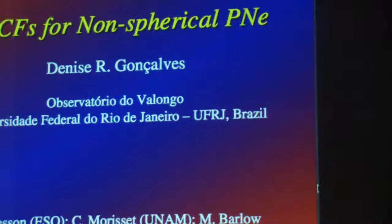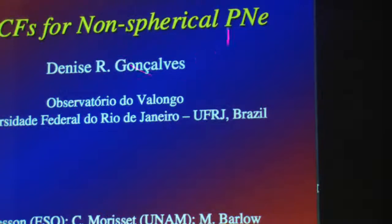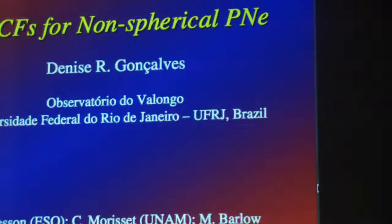I can explain that you do get different results, and the set of equations you get for deriving abundance is different if you take into account the morphologies — if you only consider the spherical, or if you also consider the elliptical and bipolar morphologies.